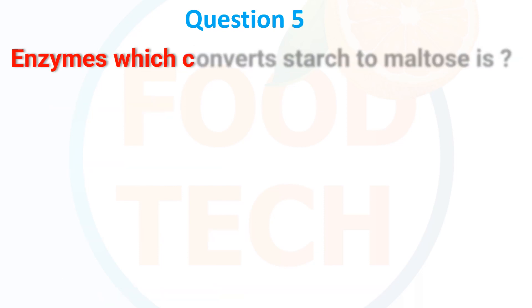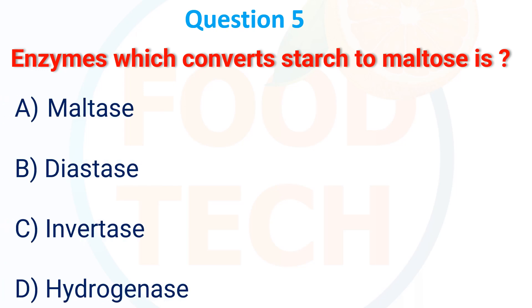Enzyme which converts starch to maltose is: A. maltase, B. diastase, C. invertase, D. hydrogenase. The answer is B, diastase.